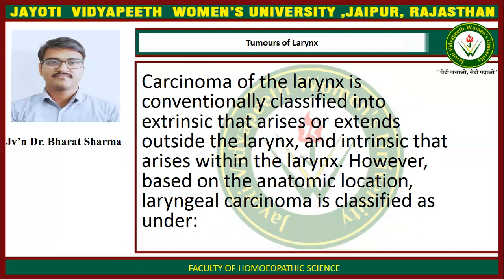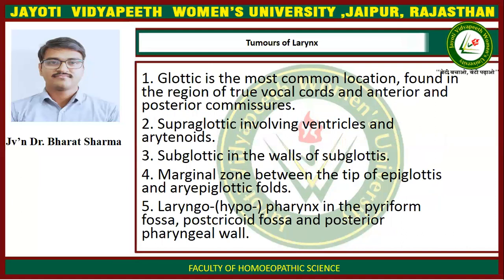Based on the anatomic location, laryngeal carcinoma is classified as follows: First is Glottic, the most common location, found in the region of true vocal cords, anterior and posterior commissure. Second is Supraglottic, involving ventricles and arytenoids. Third is Subglottic, in the wall of subglottis. Fourth is Marginal zone, between the tip of the epiglottis and aryepiglottic folds. Fifth is Laryngopharynx, involving the pharynx in the piriform fossa, post-cricoid fossa, and posterior pharyngeal wall.